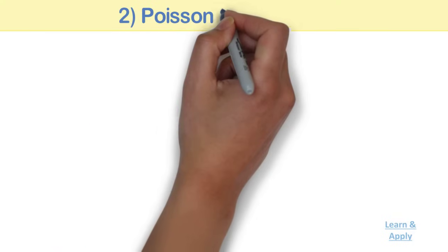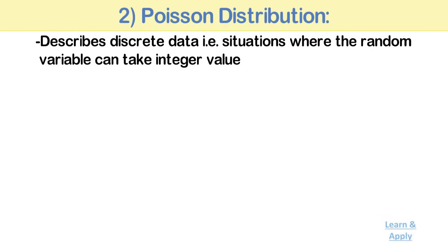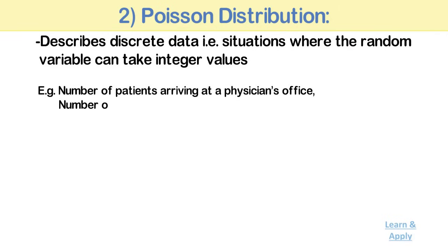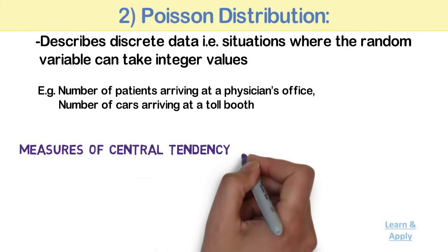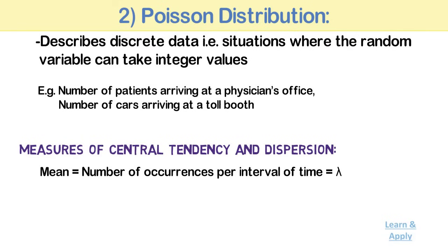Poisson Distribution: Poisson distribution also describes discrete data — situations where the random variable can take integer values. For example, the number of patients arriving at a physician's office, or the number of cars arriving at a toll booth. Measures of Central Tendency and Dispersion: for the Poisson distribution, mean is equal to the number of occurrences per interval of time, denoted by lambda (λ), and standard deviation is equal to square root of the mean, which equals square root of lambda.